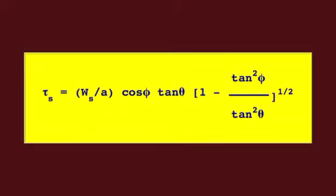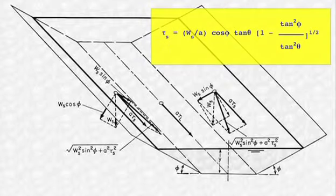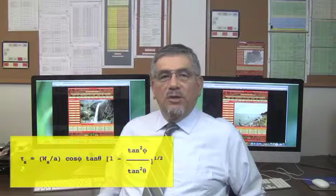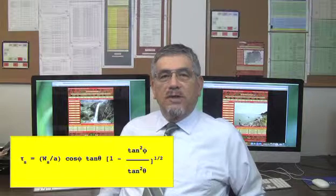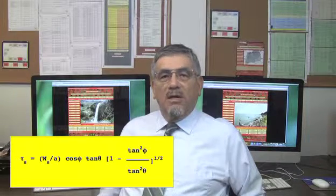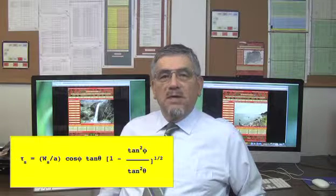Static equilibrium leads to the Tractor-Stress on the sides, in which W sub S is the submerged weight of the particle, A is the effective area of the particle, theta is the particle friction angle, and phi is the channel side slope.